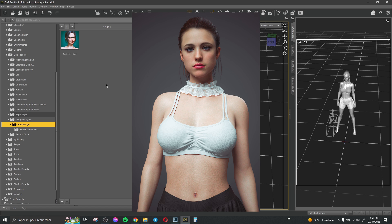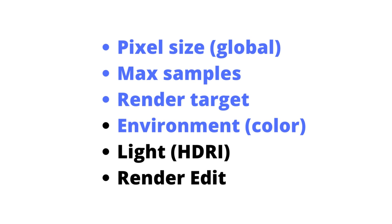For example, like that. These six things are: the pixel size global, the max samples that you use in your render, the render target — that means render to a new window or direct to file — the environment color (if you create portraits like me, mostly I create portraits), and the light, mostly the HDRI map that you use and how to manage your HDRI map and change some options to get a perfect or good light.